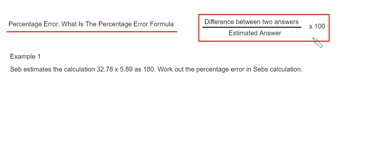Let's have a look at an example. Seb estimates the calculation 32.78 × 5.89 as 180. We've got to work out the percentage error in Seb's calculation.